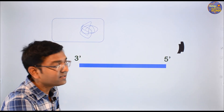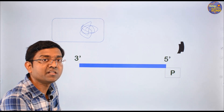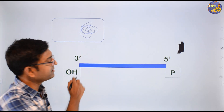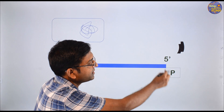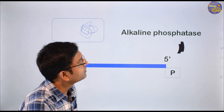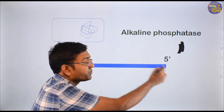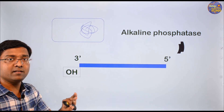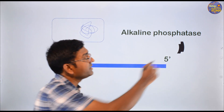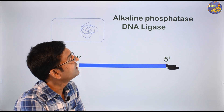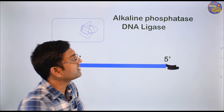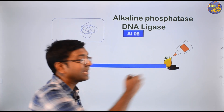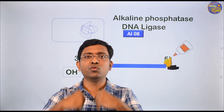At the 3' end there is an OH group and at the 5' end there is a phosphate group. With the help of alkaline phosphatase, the phosphorous group was removed so the linearized plasmid cannot recoil back to circular form. Then the foreign DNA was attached to the plasmid, and DNA ligase was used to join them — to fix and hold them together.